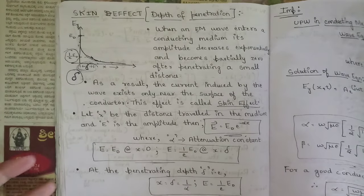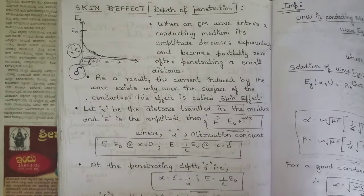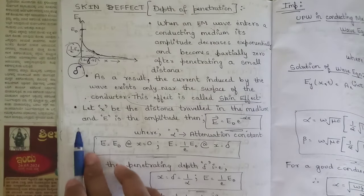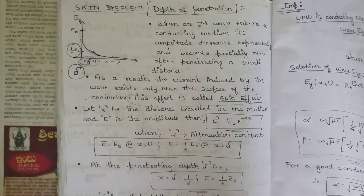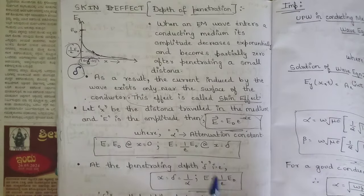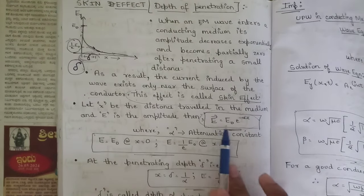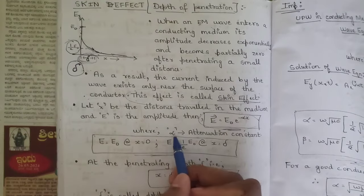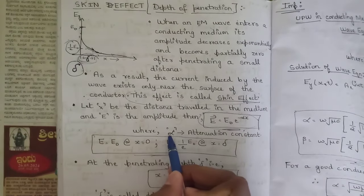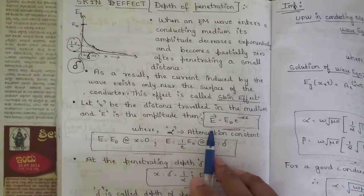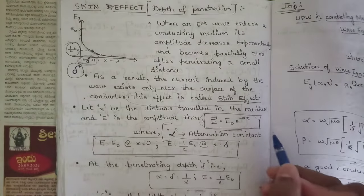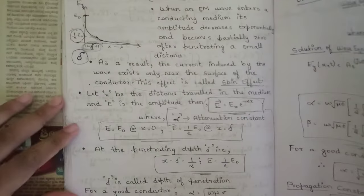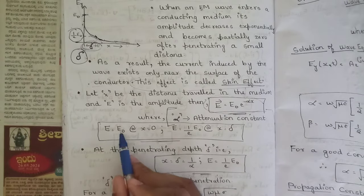Let's get the expression for depth of penetration. Let x be the distance traveled in the medium and E be the amplitude. The expression is: E = E₀ · e^(−αx), where α is the attenuation constant.